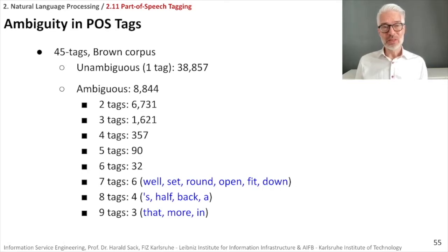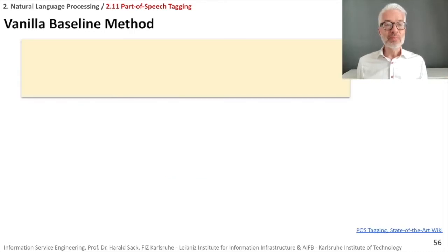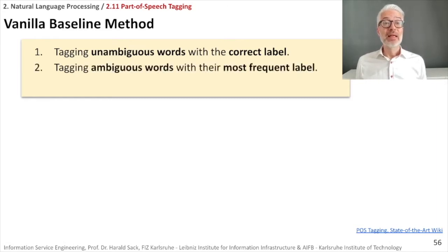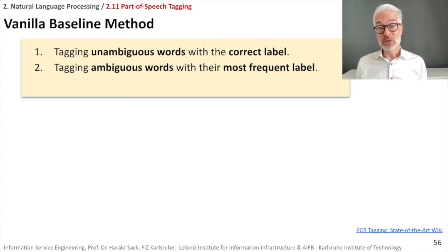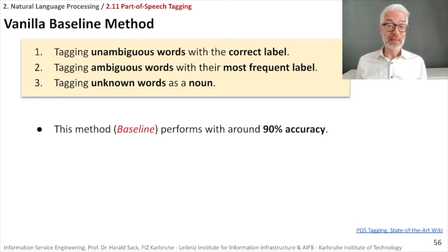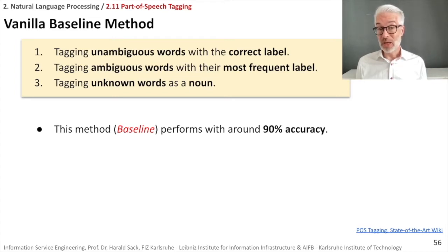We need to tackle this ambiguity. A vanilla baseline method works as follows: first, tag unambiguous words with the correct label using a dictionary. For ambiguous words, assign their most frequent label from corpus statistics. For unknown words, tag them as nouns, since nouns are coined most frequently. This baseline already achieves around 90% accuracy.